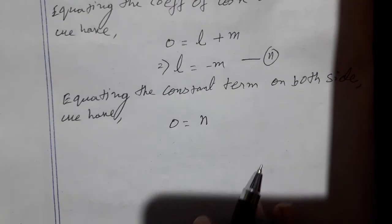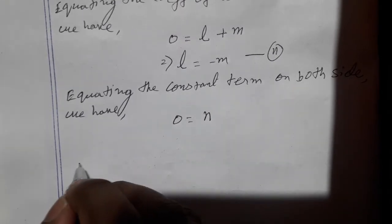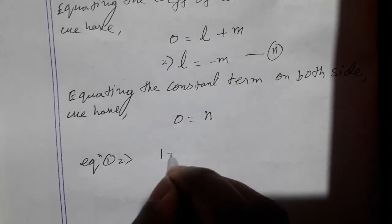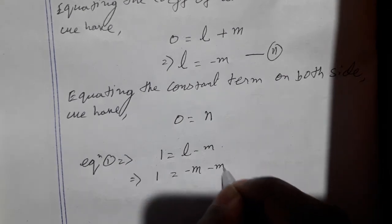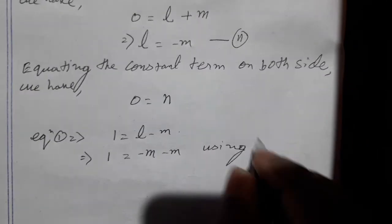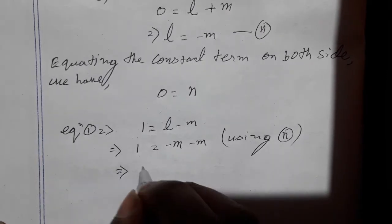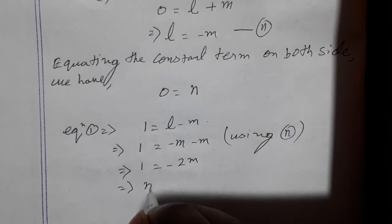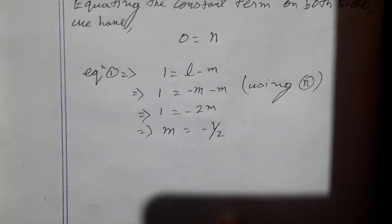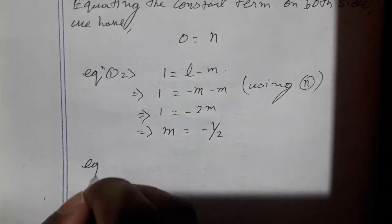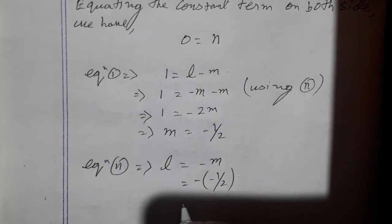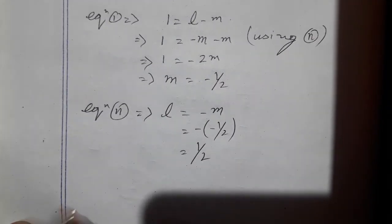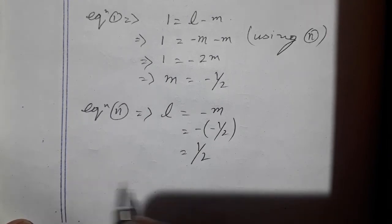Now we solve equations 1 and 2 to find L and M. Equation 1 gives 1 equal to L minus M. Using equation 2, L equals minus M, so substituting: 1 equals minus M minus M, which gives 1 equals minus 2M, so M equals minus one half. Then from equation 2, L equals minus M equals minus of minus one half, which is one half. So L equals one half and M equals minus one half.